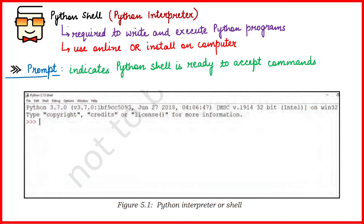To write Python programs you have two major options: either you install the Python interpreter in offline mode on your computer, or you write and run your programs in an online mode, which provides you with an environment where you can write commands, execute them, change them, and rerun them.